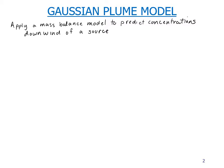We use the Gaussian plume dispersion model to predict concentrations of a pollutant downwind of a source where it's being emitted from, and it involves applying a mass balance model.